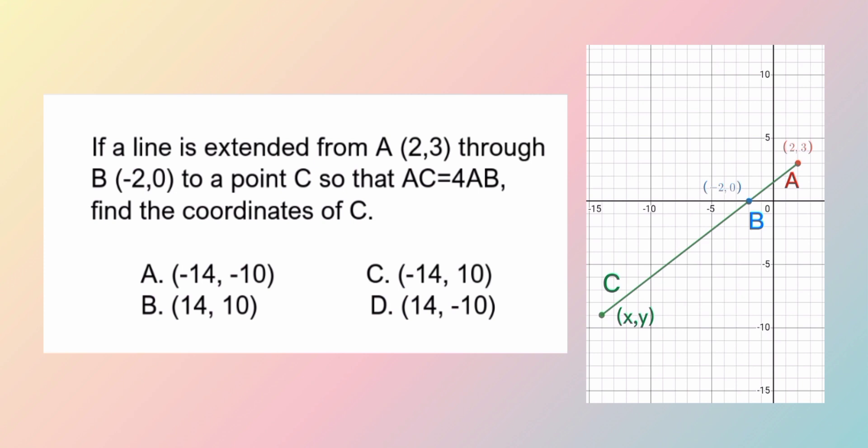find the coordinates of point C. So here, we have the graph, point A with coordinates (2,3) through point B (-2,0) to be extended to point C.